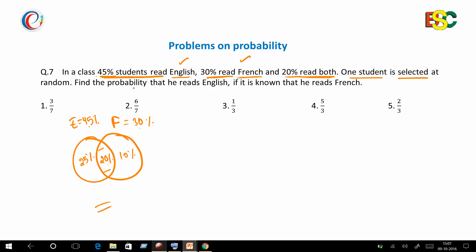at random. Find the probability that he reads English if it is known that he reads French. This is a conditional probability because the condition 'it is known that he reads French' is given. In the case of conditional probability, the condition becomes the primary thing, or you can say the condition becomes the sample space.